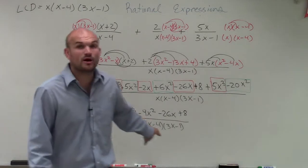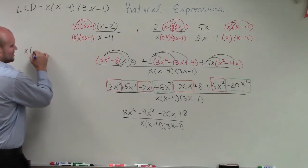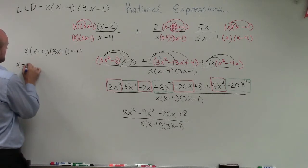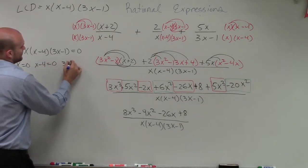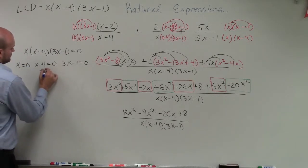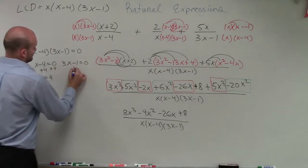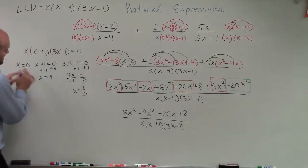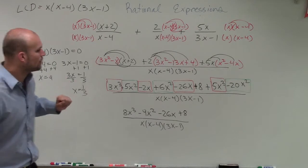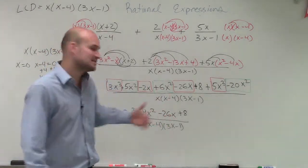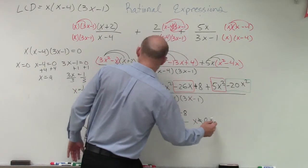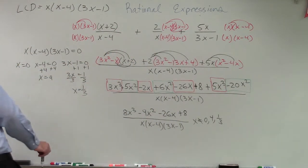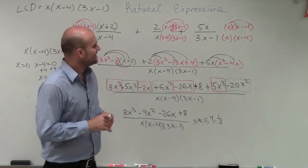To determine restrictions, set the denominator equal to 0. Since we have a product equal to 0, we apply the zero product property — set each factor equal to 0 and solve for x. We obtain that x equals 0, 4, or 1/3 are the values that make the denominator 0, so those are the restrictions on this rational expression.